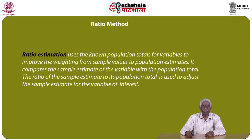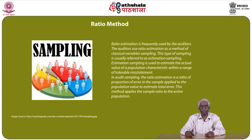Now let us discuss the ratio method. Ratio estimation uses known population totals to improve the weighting from sample values to population estimates. It compares the sample estimate of a variable with the population total, and the ratio of the sample estimate to its population total is used to adjust the sample estimate for the variable of interest. Ratio estimation is frequently used by auditors as a method of classical variable sampling, also referred to as estimation sampling, which estimates the actual value of a population characteristic within a range of tolerable misstatement. In audit sampling, the ratio estimation is the proportion of errors in the sample applied to the population value to estimate total error.